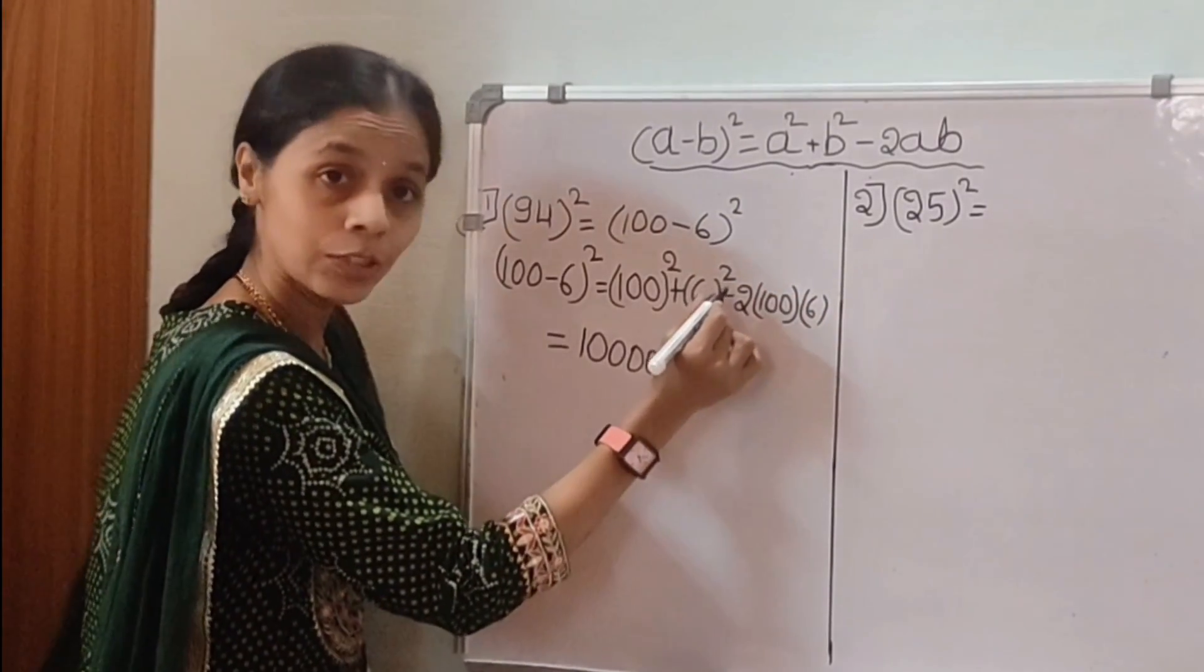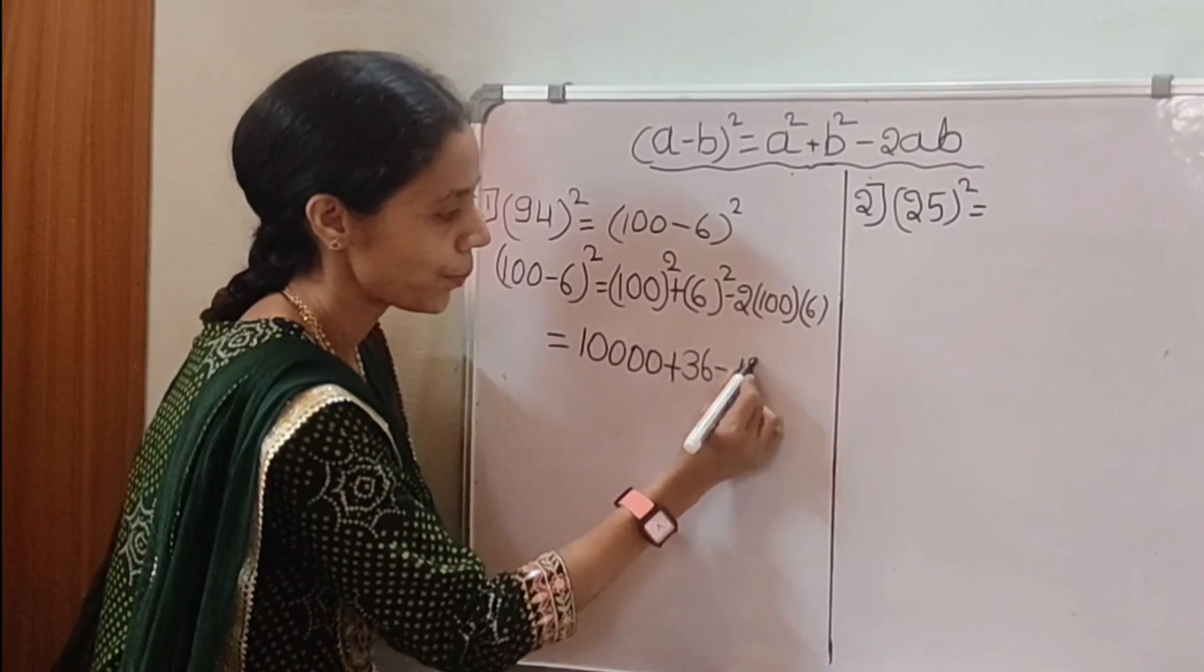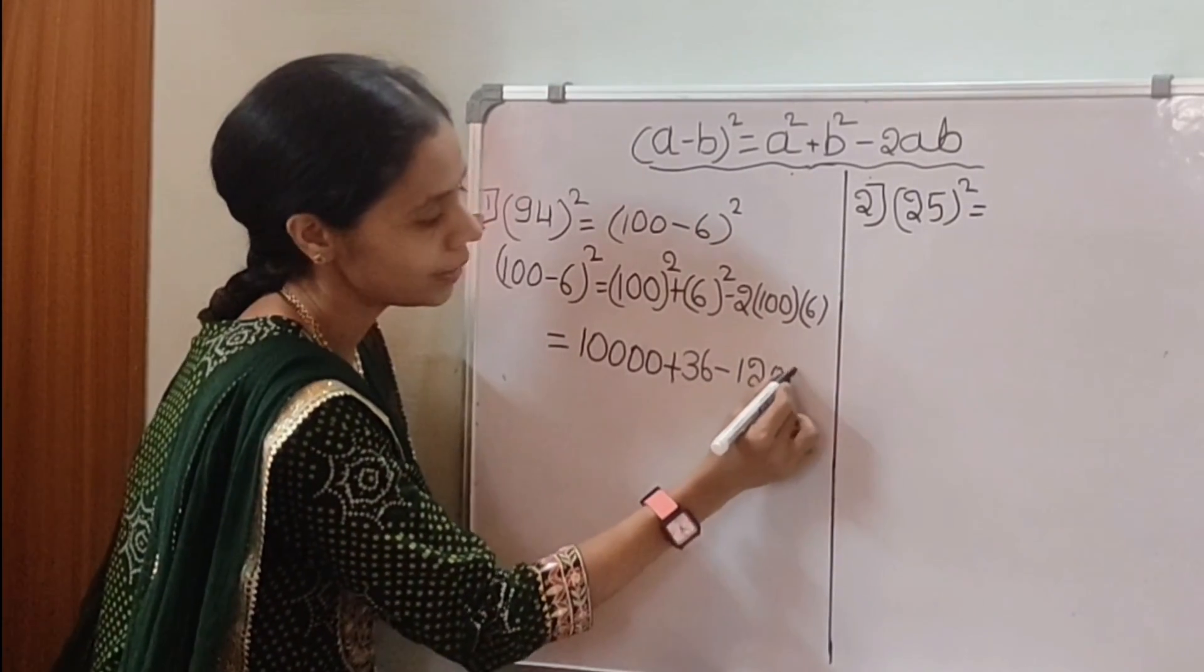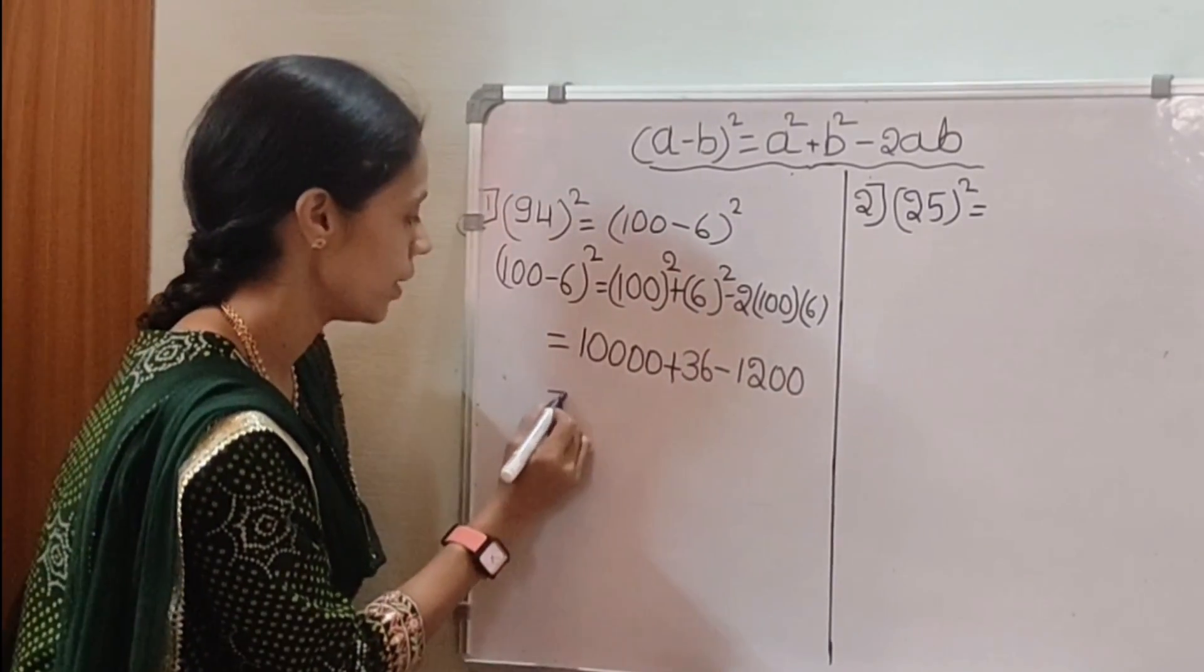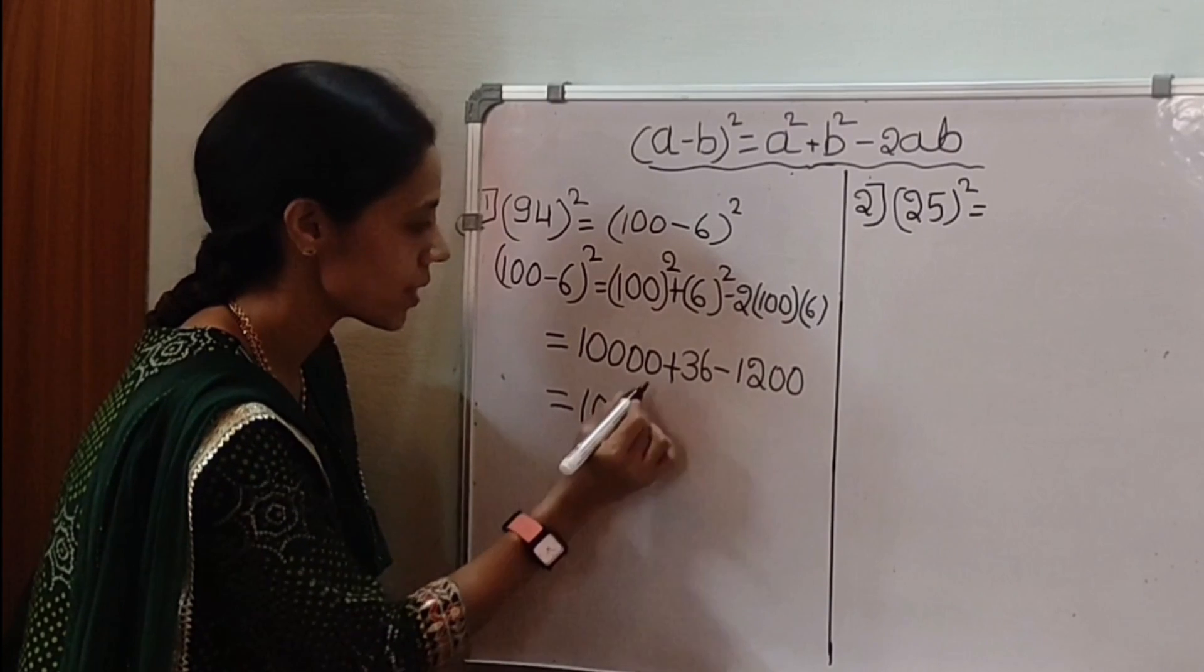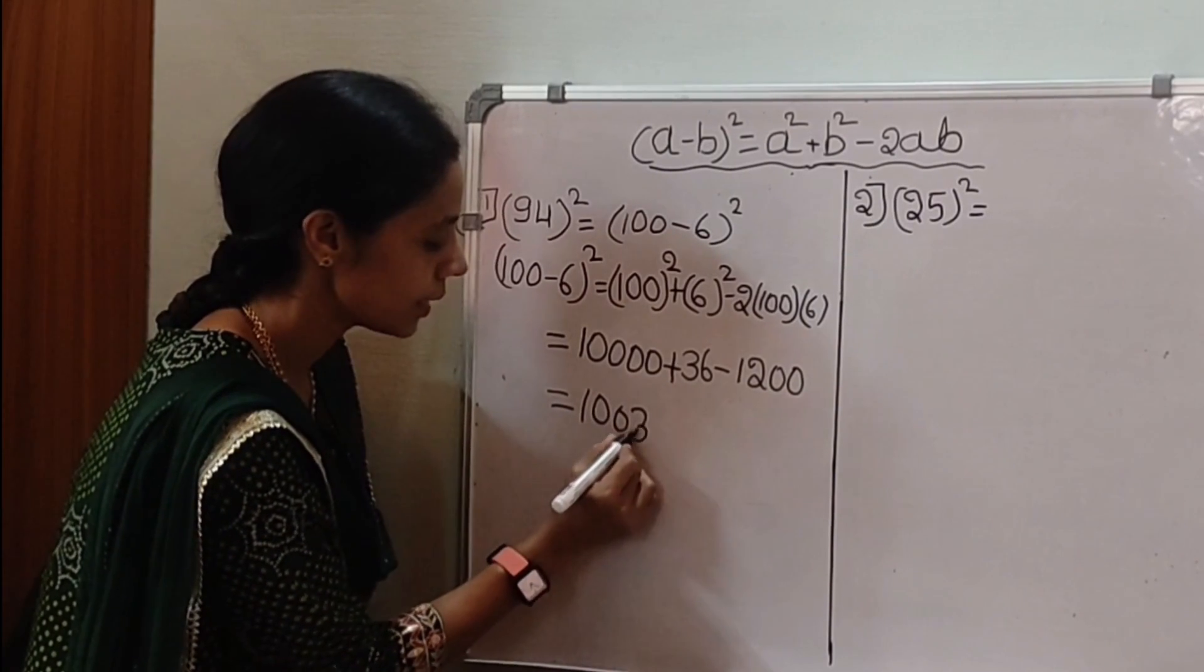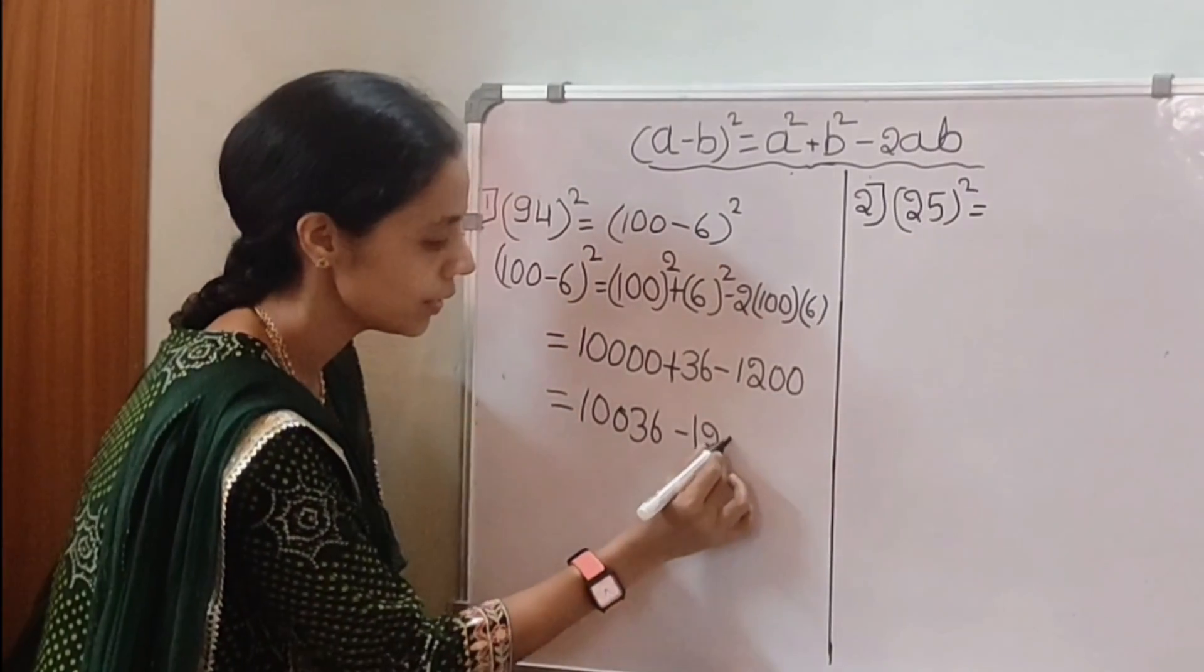simplify this one. 100 × 2 is 200, × 6 is 1,200. Simplify this one. We get the square of 94: 10,000 + 36 - 1,200.